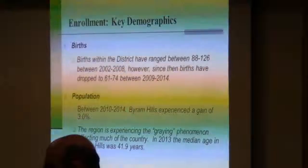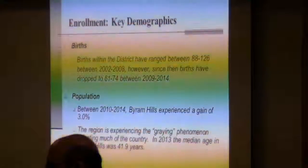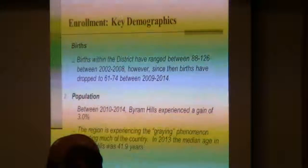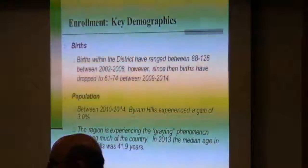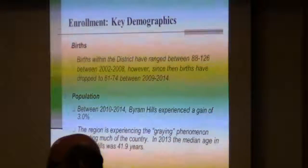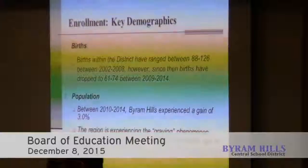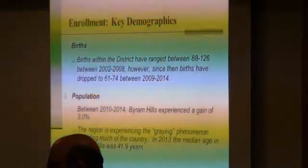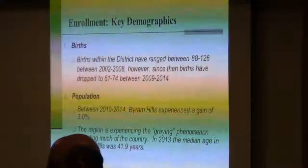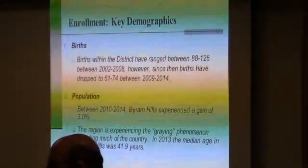There are three key things to look at this year. One is births — within the district births have ranged between 88 and 126, but in recent years they've dropped to between 61 and 74. This likely means fewer young people have been moving in. We know younger people are the ones who are having babies. The population did experience a gain overall. Part of the birth rate data is the fact that Byram Hills is experiencing a graying phenomenon — the median age was 41.9, which is higher than Westchester County and much higher than New York State.